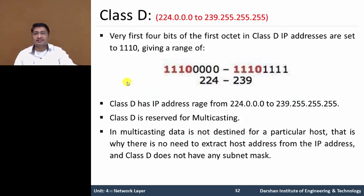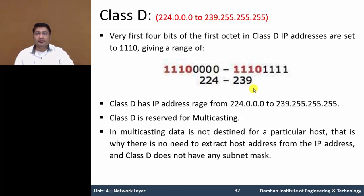In Class D, the first 4 bits of the first octet are fixed as 1110. The range of Class D is 224.0.0.0 to 239.255.255.255. Class D is reserved for multicasting. In multicasting, data is not destined for a particular host, so there is no need for host addresses. Class D does not have any subnet mask.